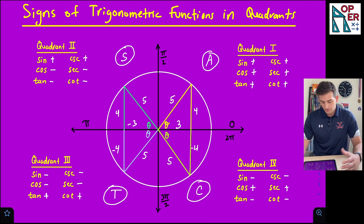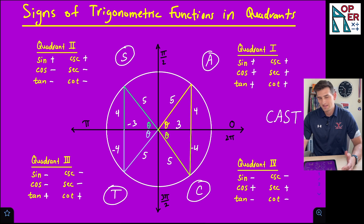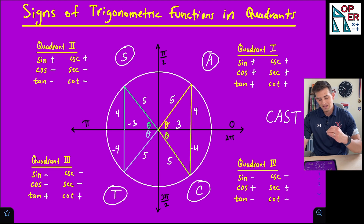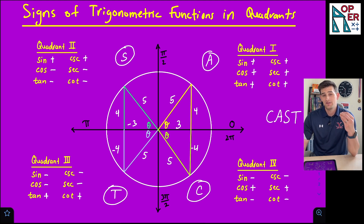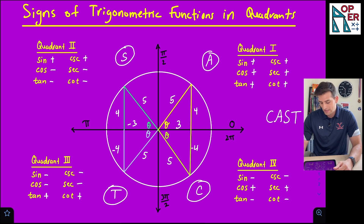There is an acronym you can use called CAST — C-A-S-T. The only thing about this acronym is it doesn't start in quadrant one; it starts in quadrant four. Going four, one, two, three — you can remember CAST, which tells you which trig functions are positive in each quadrant.